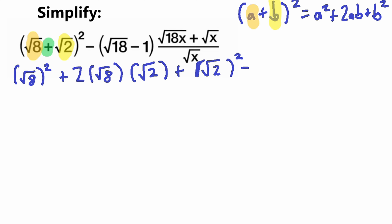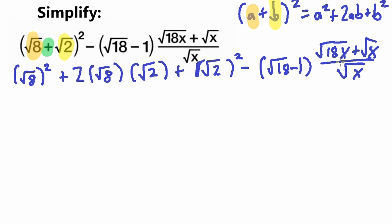Now let's look at the second part. We have square root of 18 minus 1 — looking at it I don't see much we can do with it for now, so I'll leave it as is. For the fraction part with the square roots of x's, notice that every single term inside the fraction has a square root of x. One rule of square roots is that if you have two things multiplied under a square root, you can split them. So square root of 18x can become square root of 18 times square root of x, plus square root of x, all over square root of x.